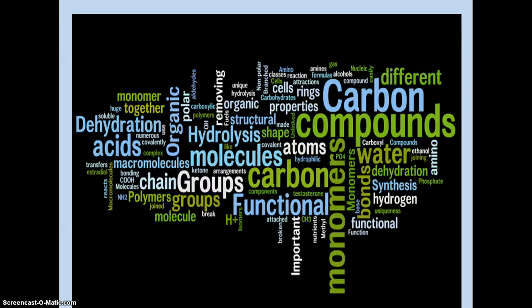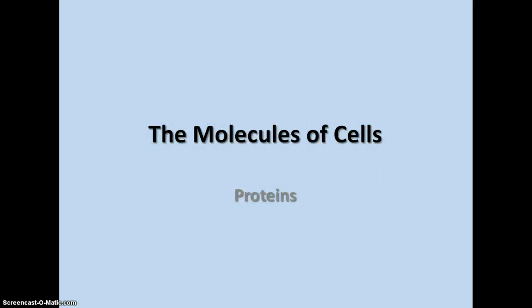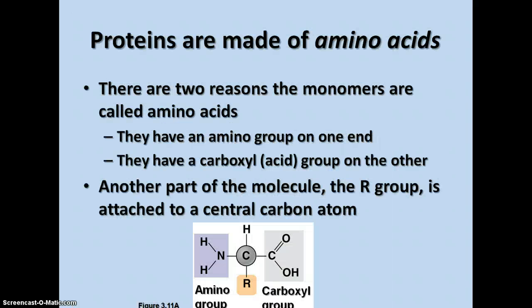This is the fourth note set on carbon compounds, the molecules of cells. This one is about proteins. Proteins are made of amino acids, and as we discussed earlier, there are two reasons monomers are called amino acids: because they have an amino group on one end of the molecule and a carboxyl or acid group on the other.